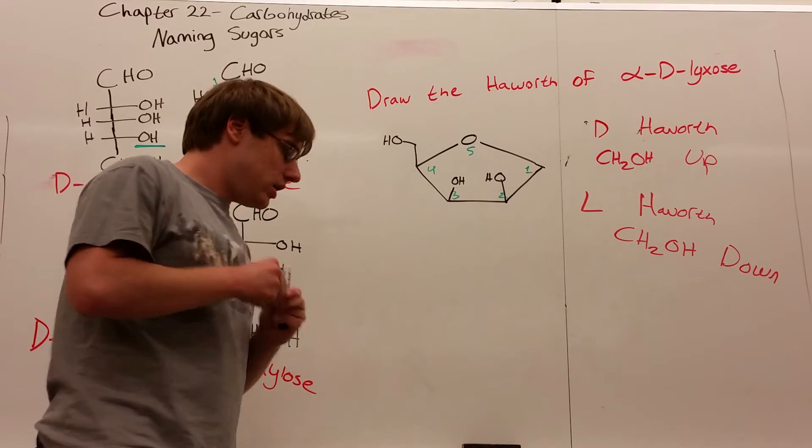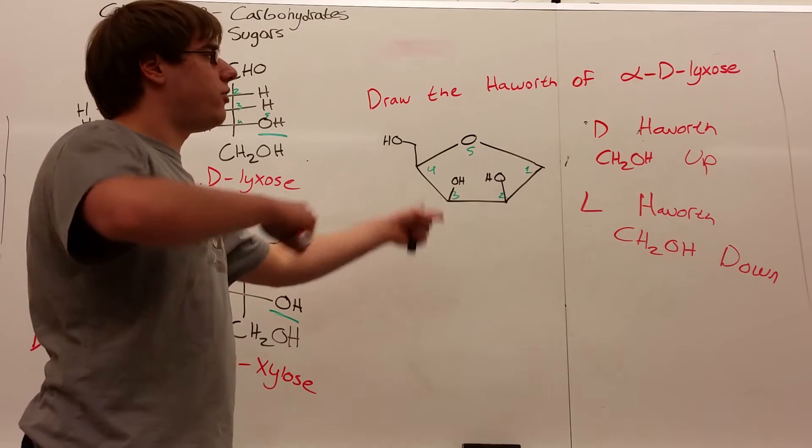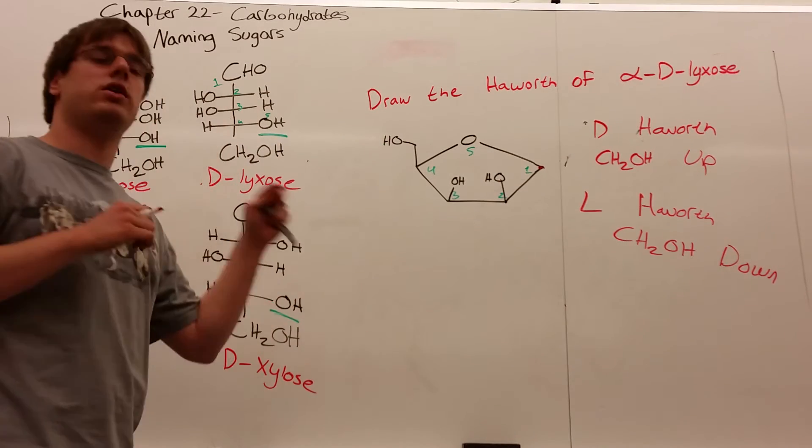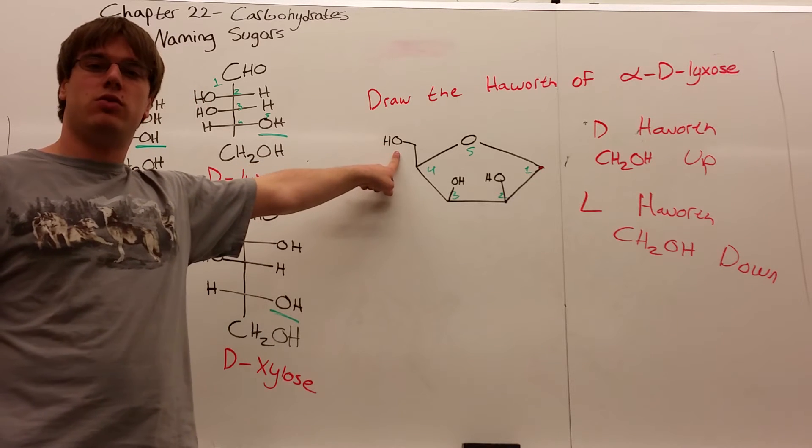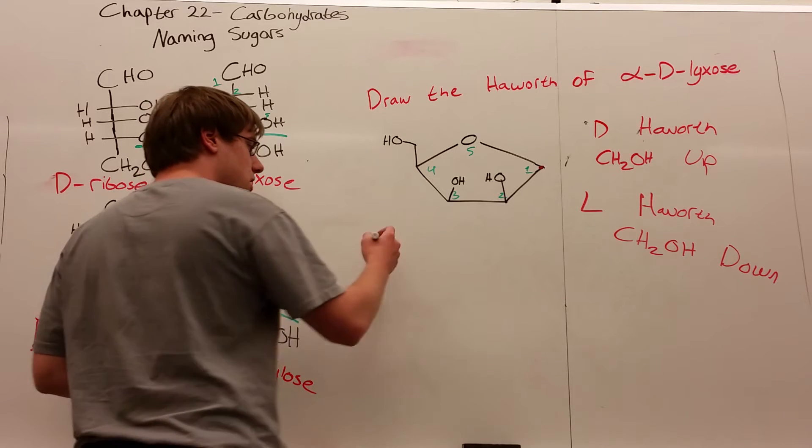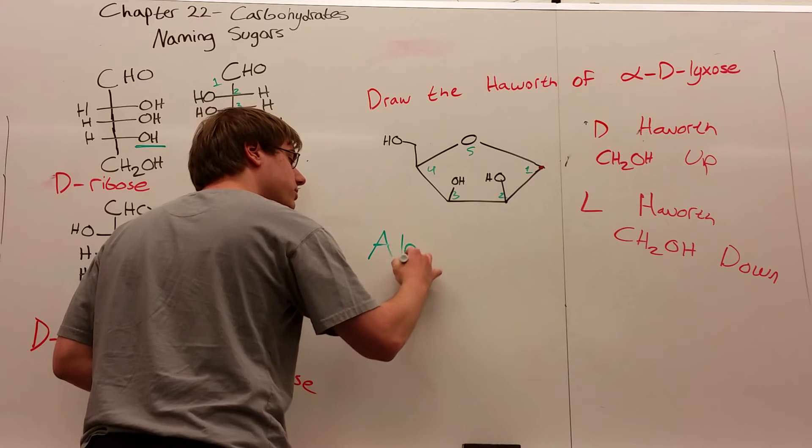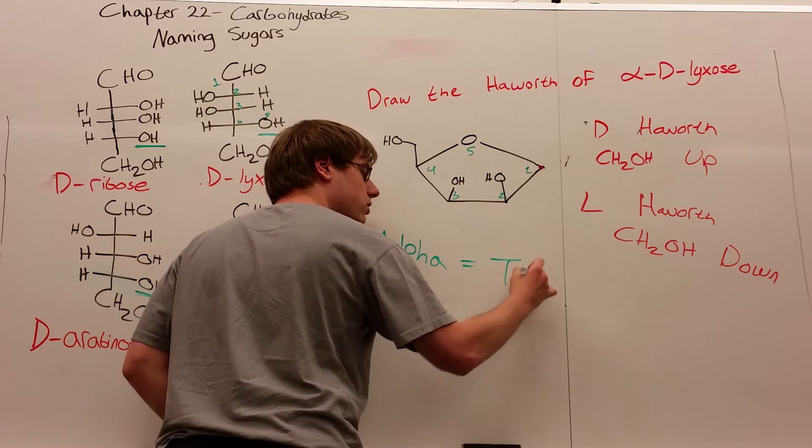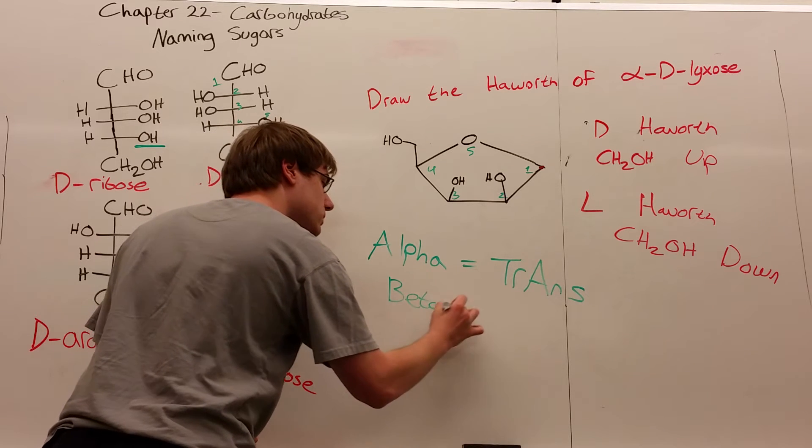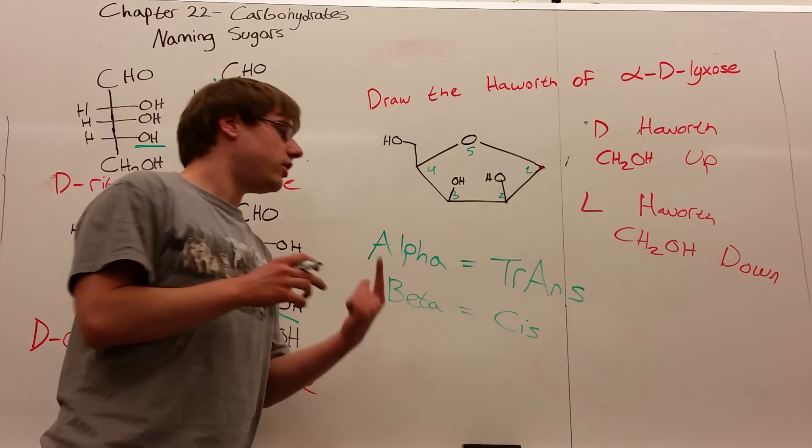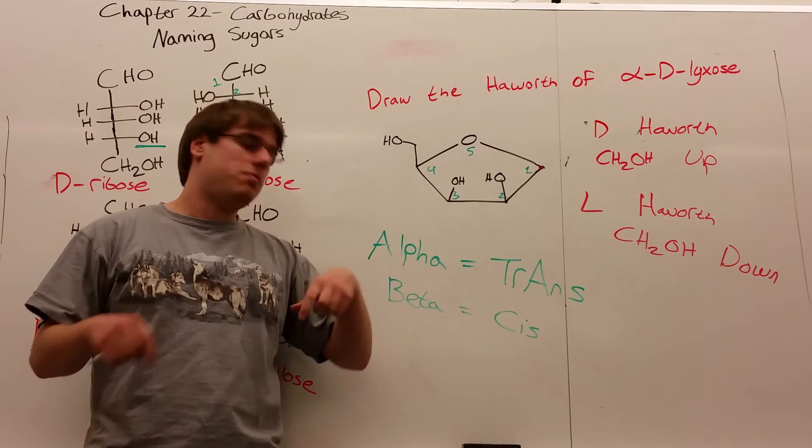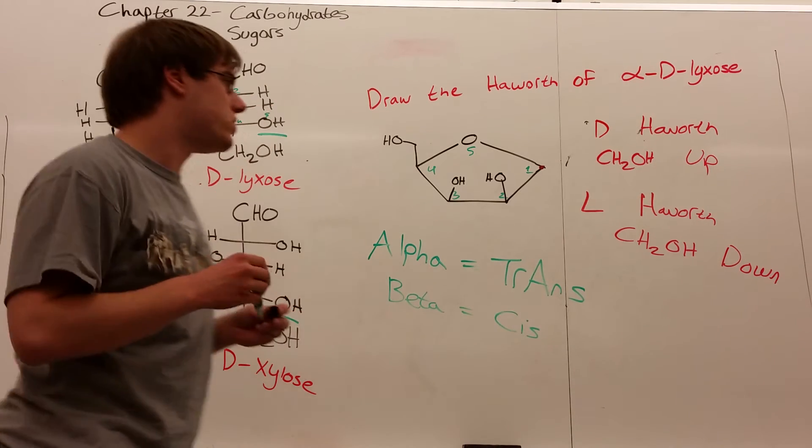The alpha or beta part of the name has to do with the anomeric OH and its position—up versus down—in comparison to the penultimate carbon's CH2OH. Remember: when you see alpha, think trans. Alpha equals trans, beta equals cis. Alpha being trans means the anomeric OH points in the opposite direction of the CH2OH group. Beta being cis means the anomeric OH points in the same direction as the CH2OH group.